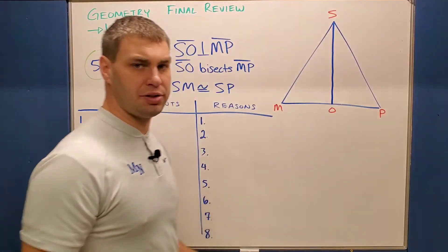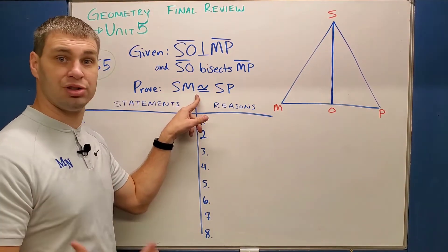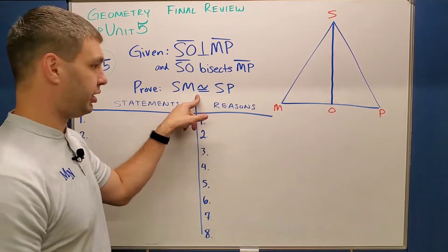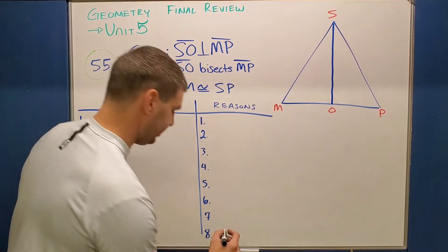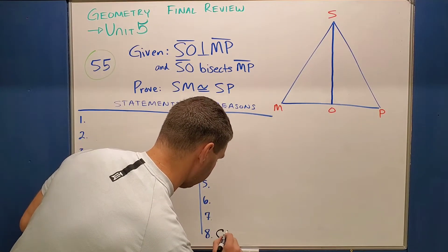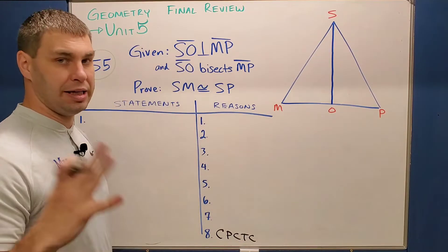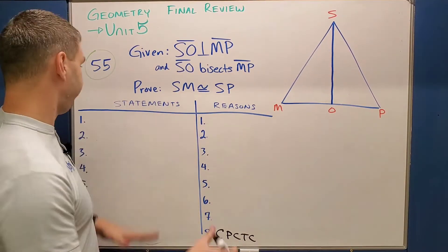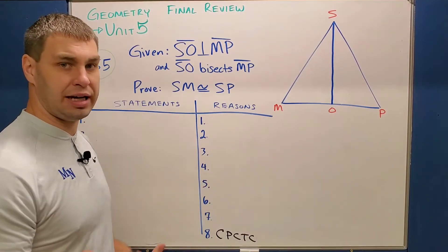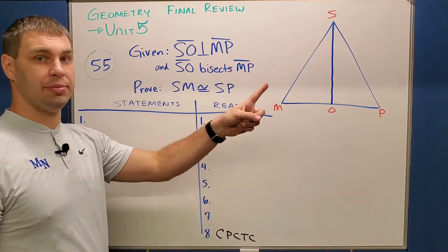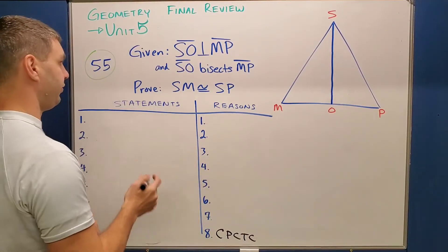If you look at the first of the two proofs we're going to do, it's not asking us to prove that two triangles are congruent, but rather two parts of those triangles are congruent. That means our last reason is going to be CPCTC — corresponding parts of congruent triangles are congruent. Now I'm going to fill in my two givens and my reasons. If you don't know how to fill in your given statements, I'll put a good video up here that you can watch.